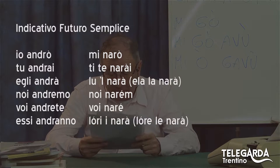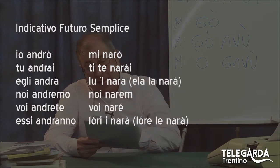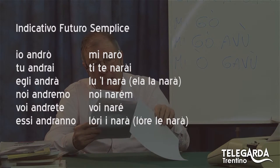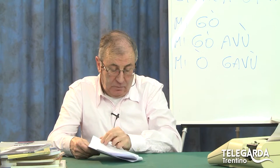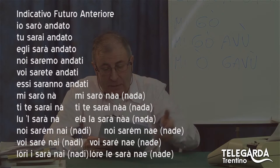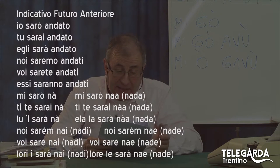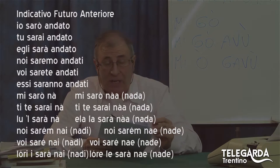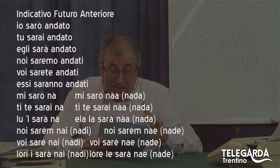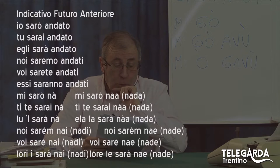E voi vedete, probabilmente in sovraimpressione, anche gli esempi che faccio: mi narò montagna, ti tenarai montagna, eccetera. Finito il futuro semplice, andiamo al futuro anteriore: io sarò andato, tu sarai andato, eccetera. Mi sarò na, ti te sarai na, lul sarà na o ela la sarà naa o ela sarà nada. Noi saremm' nai o nadi.